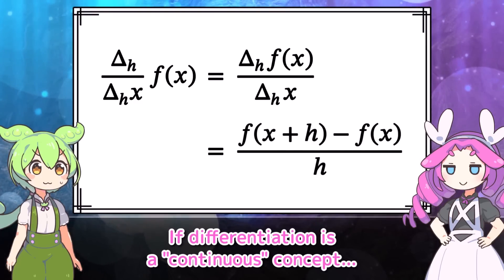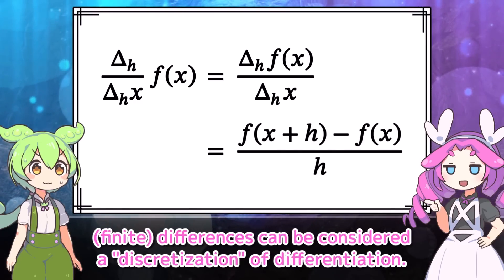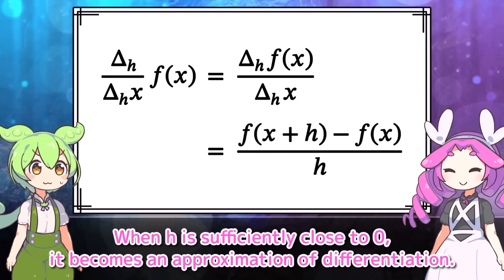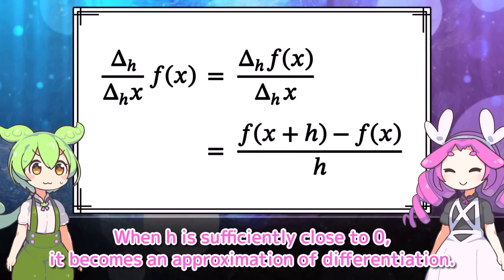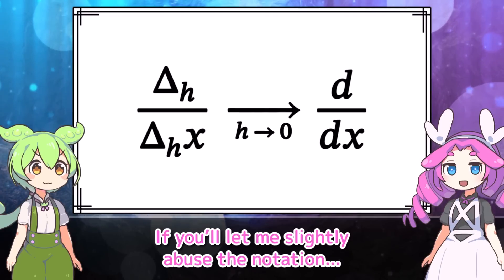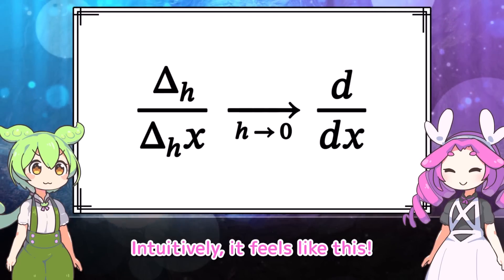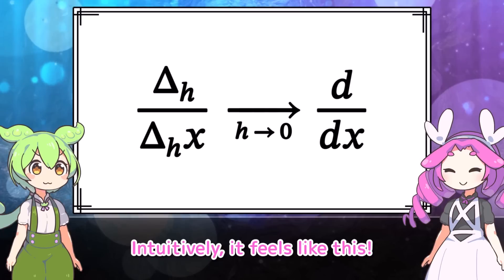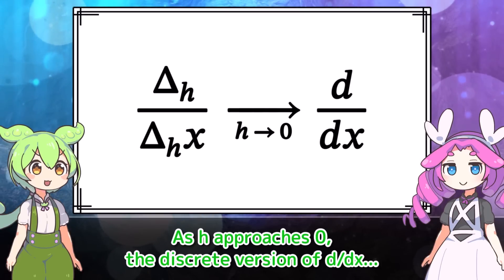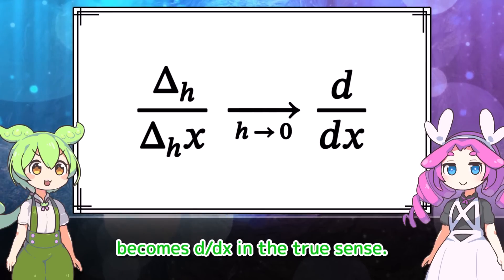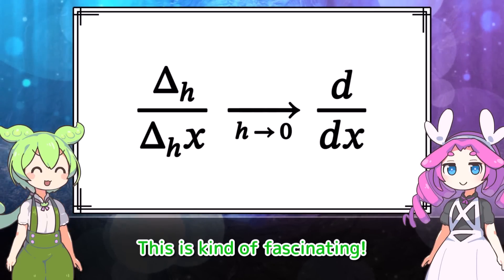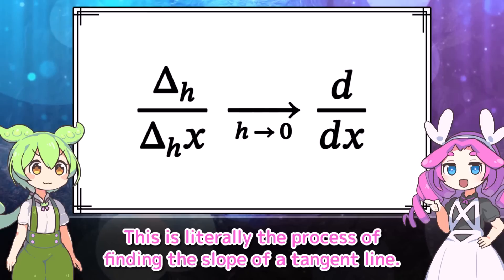If differentiation is a continuous concept, differences can be considered a discretization of differentiation. When h is sufficiently close to zero, it becomes an approximation of differentiation. So intuitively, as h approaches zero, the discrete version of d by dx becomes d by dx in the true sense. This is literally the process of finding the slope of a tangent line.